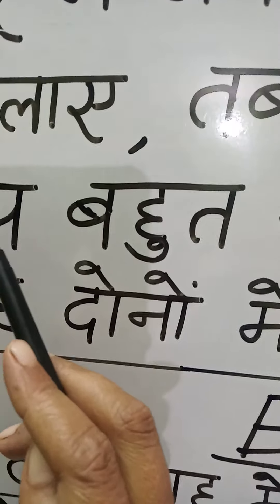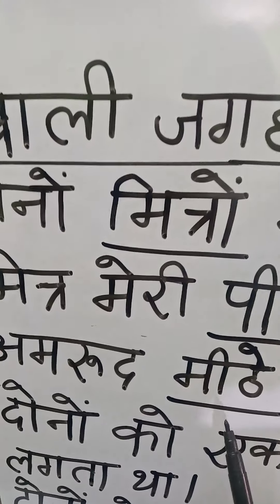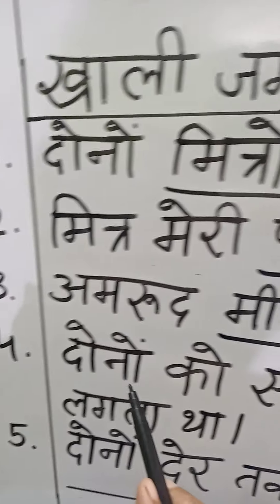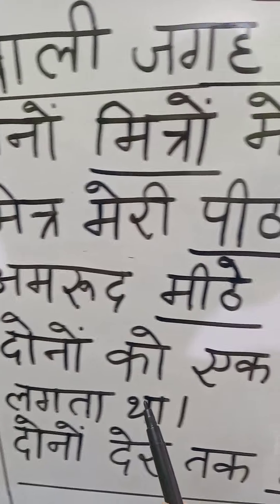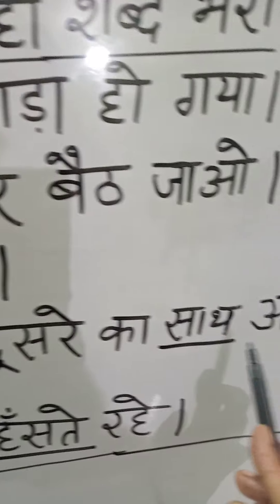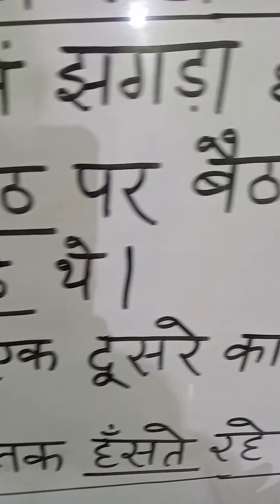Number two: मित्र मेरी ___ पर बैठ जाओ — fill in the blank में क्या भरेंगे? पीट। Number three: अमरू ___ थे — मीठे। Okay। Number four: दोनों को एक दूसरे का ___ अच्छा लगता था — साथ।